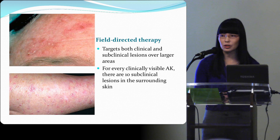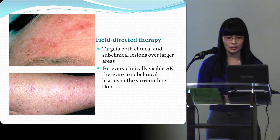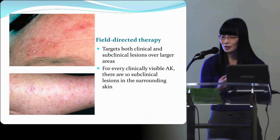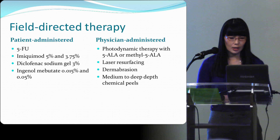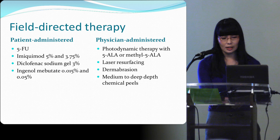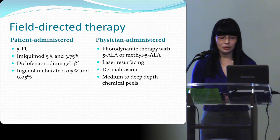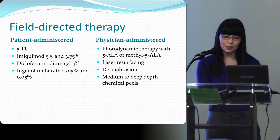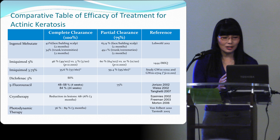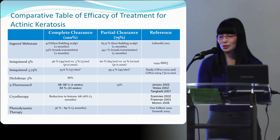Field therapy targets both clinical and subclinical lesions over larger areas. For every clinically visible AK, there are probably 10 in the surrounding area. These will come and go as your immune system tries to fight them off, but without treatment you get more and more over time. There are various types of field therapy available — excluding laser resurfacing, dermabrasion, or chemical peels due to limited robust scientific evidence — but all have pretty decent partial clearance rates around 75%.